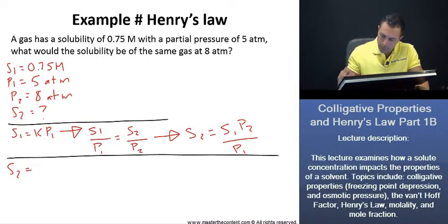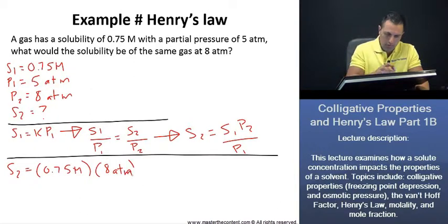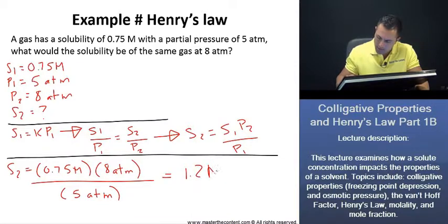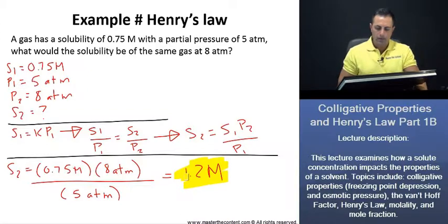We have the solubility at 5 atmospheres, which was as follows, and we have our partial pressure at 8 atmospheres over the 5 atmospheres. And once we go ahead and we equate this, we find that the solubility value is going to be as follows. Let's now move on to our next slide.